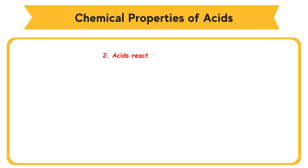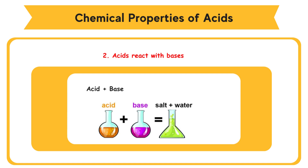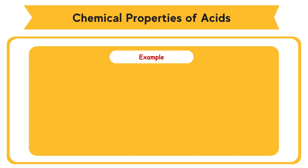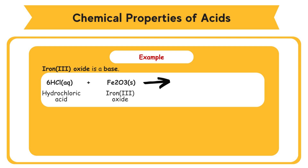2. Acids React with Bases. An acid reacts with a base to produce a salt and water. Example: Iron(III) Oxide is a base. It reacts with acids to form salts and water. Hydrochloric Acid, 6HCl, reacts with Iron(III) Oxide, Fe2O3, to form Iron(III) Chloride, 2FeCl3, and water, 3H2O.